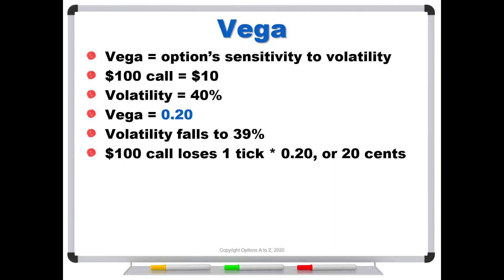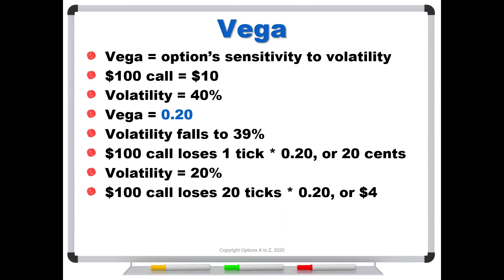What if volatility falls from 40% to 20%? You have to be really careful about extending your Greeks over wide ranges, because technically they're for very small changes in whatever they're measuring. In this case, you could estimate it by saying this is 20 ticks falling from 40 to 20, and therefore this $100 call loses 20 ticks times 0.2 vega, or about $4. It's probably going to be a little more than that, but that will get you close.